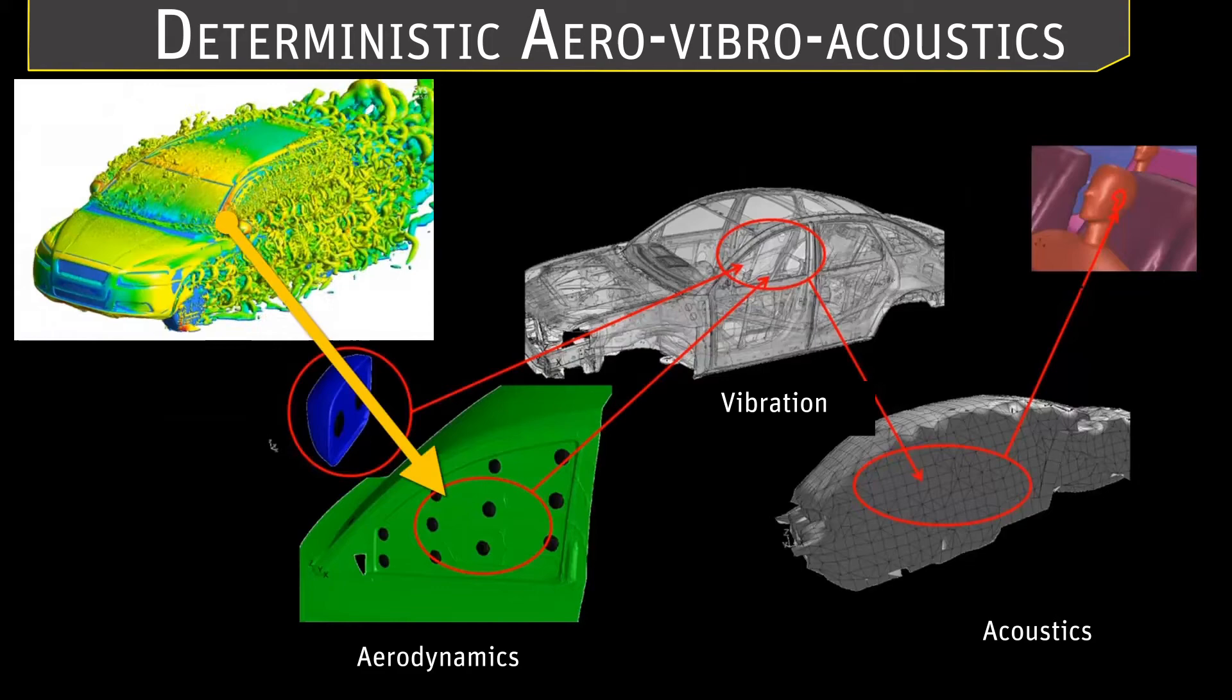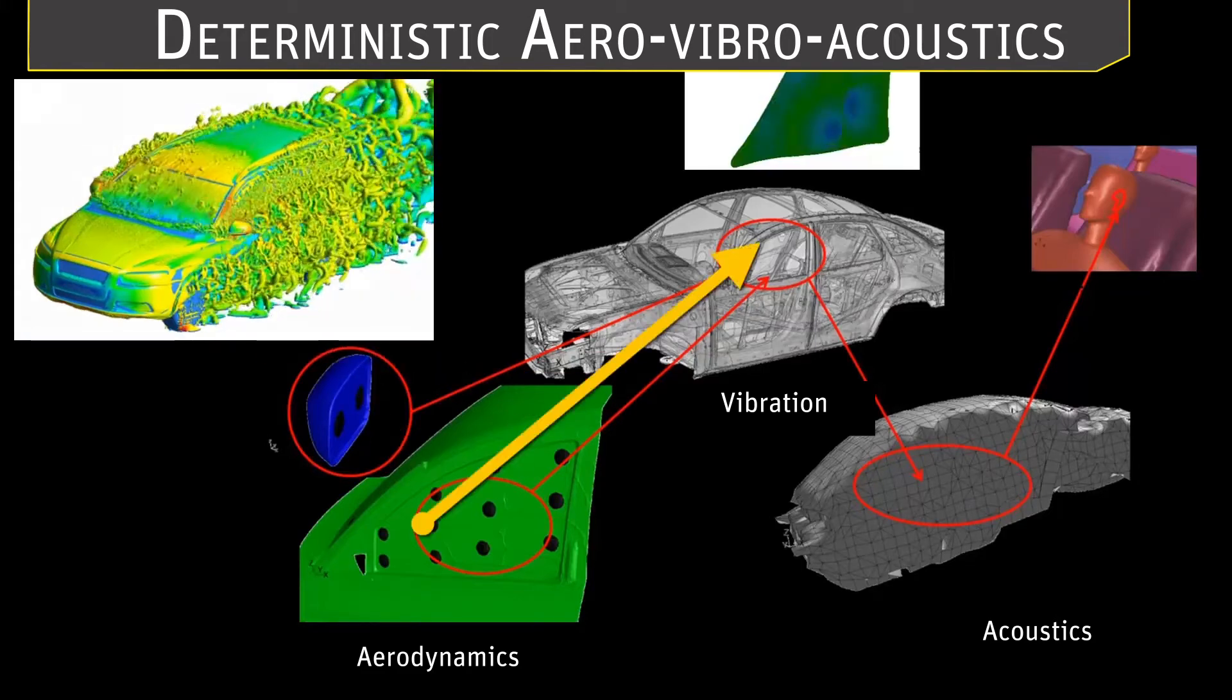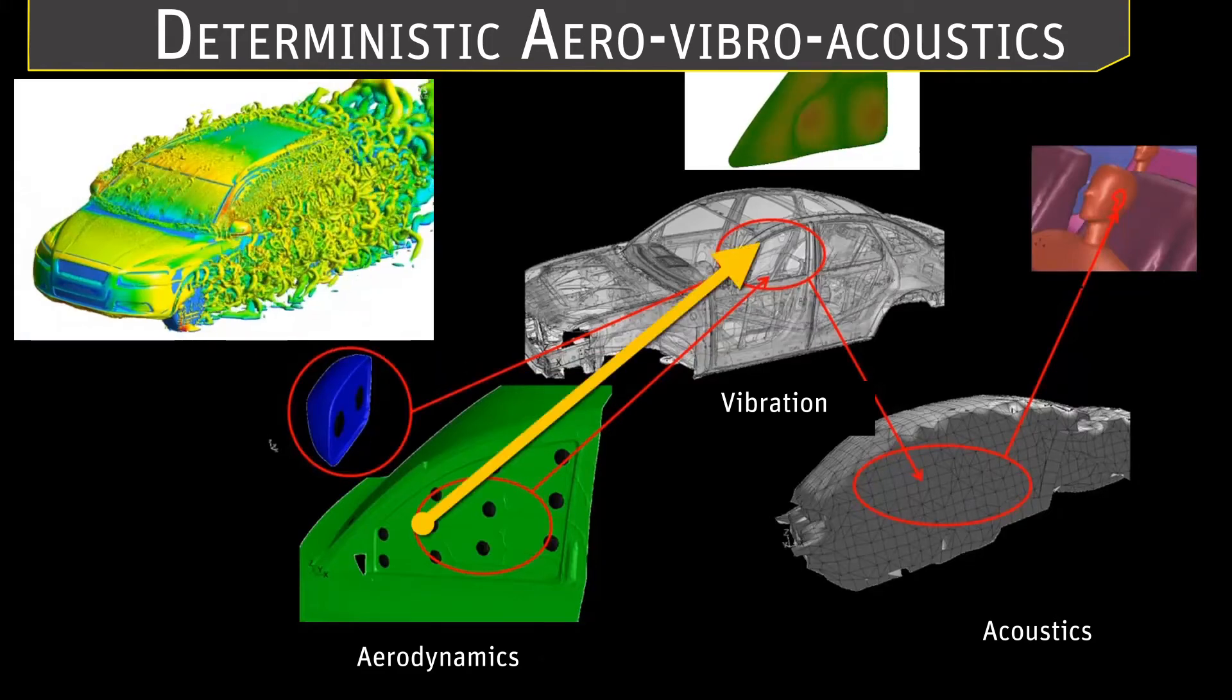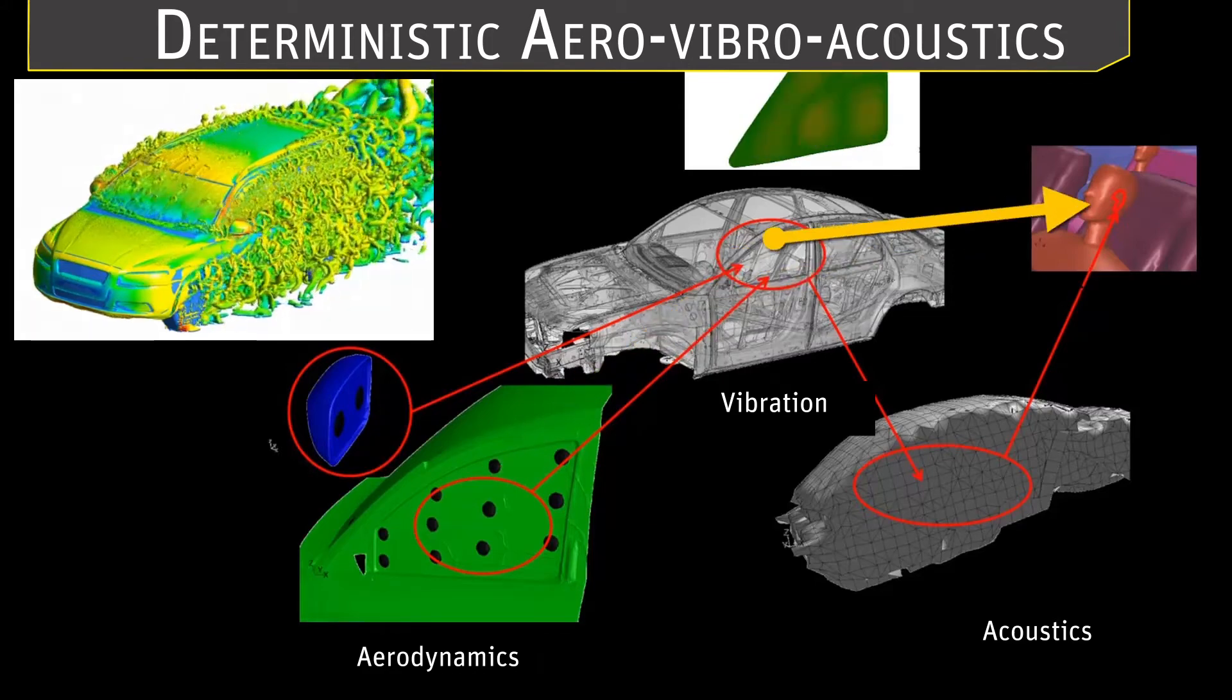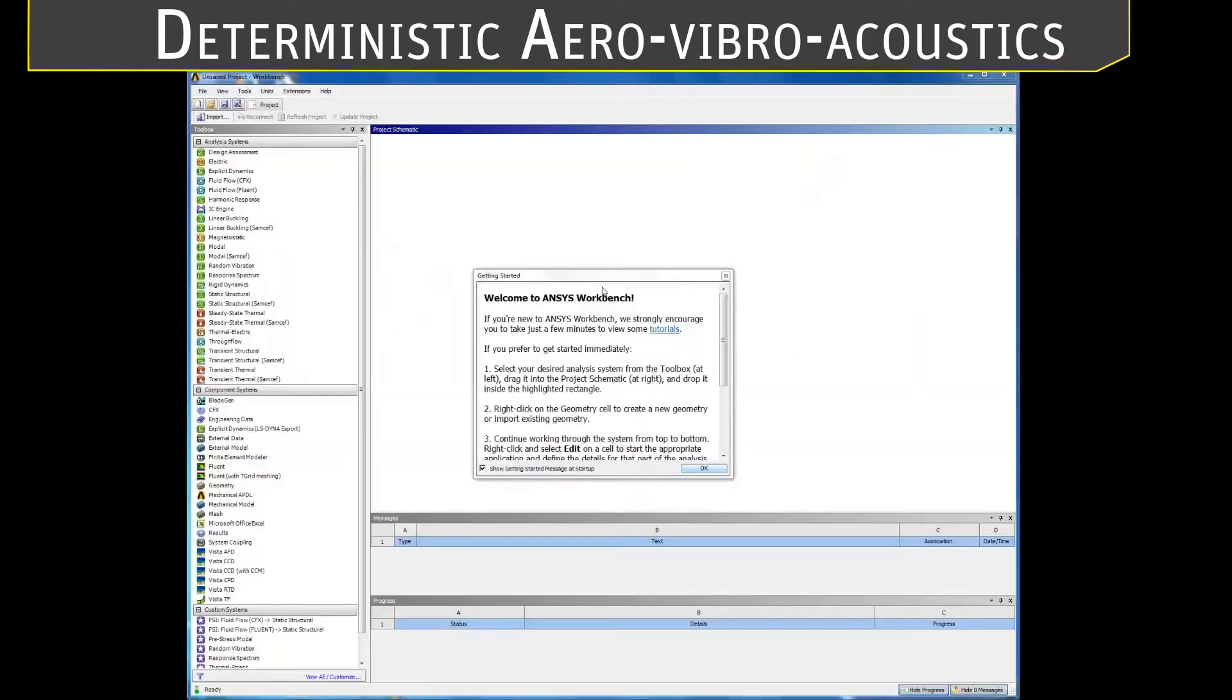Wind noise is generated by the highly turbulent airflow around the vehicle. It is then transmitted through the body of the vehicle in the form of structural vibrations and travels to the ears of the driver through the acoustic medium inside the cabin.